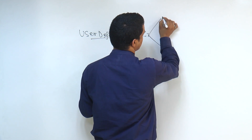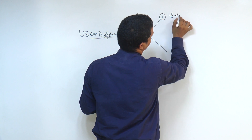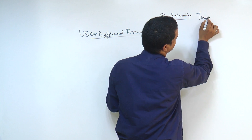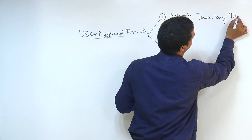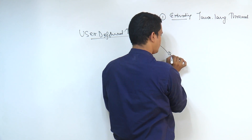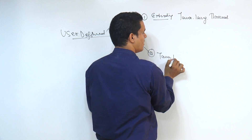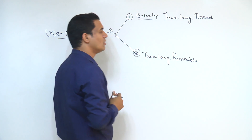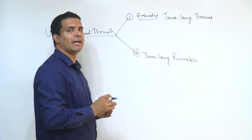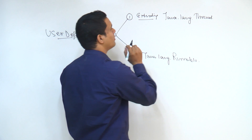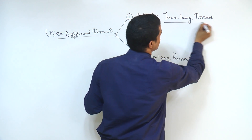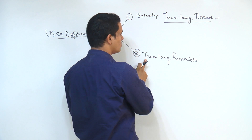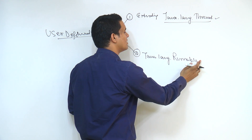The first method is by extending the java.lang.Thread class. The second method is by implementing the java.lang.Runnable interface, which is available. By using this Runnable interface, we can perform the required code and other operations.